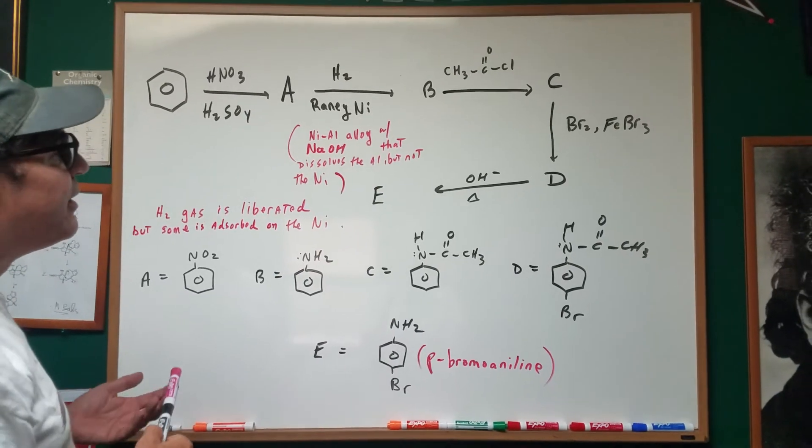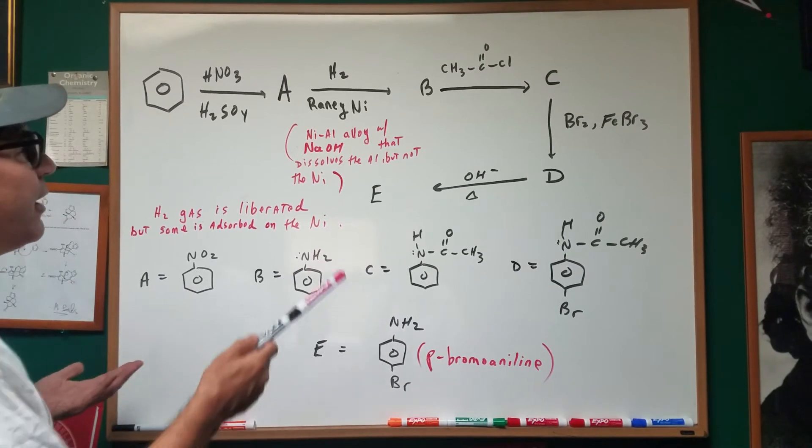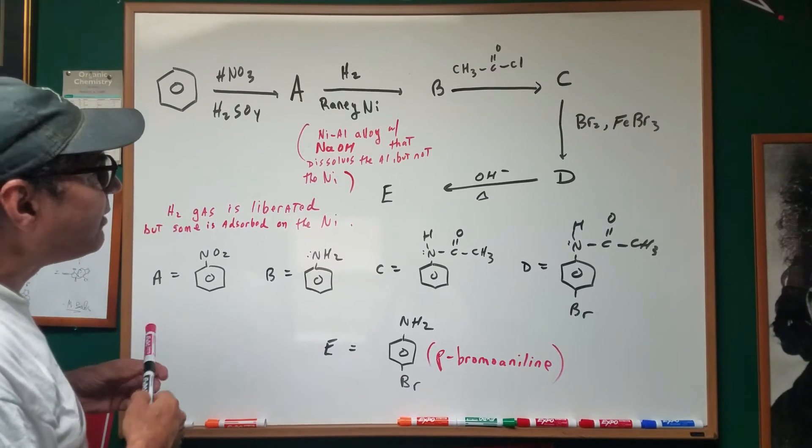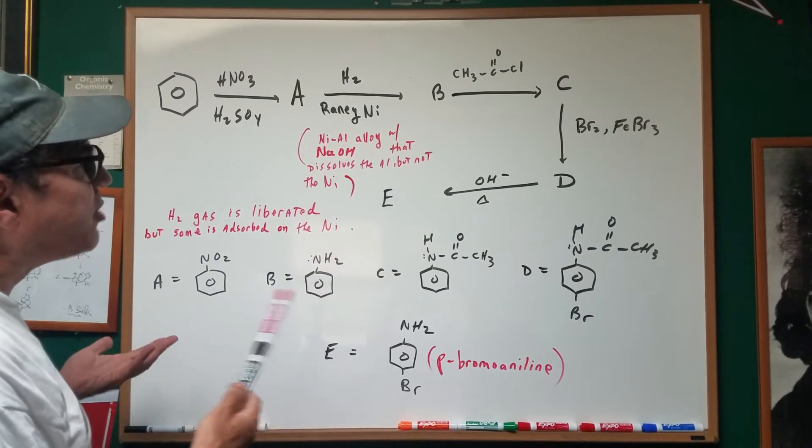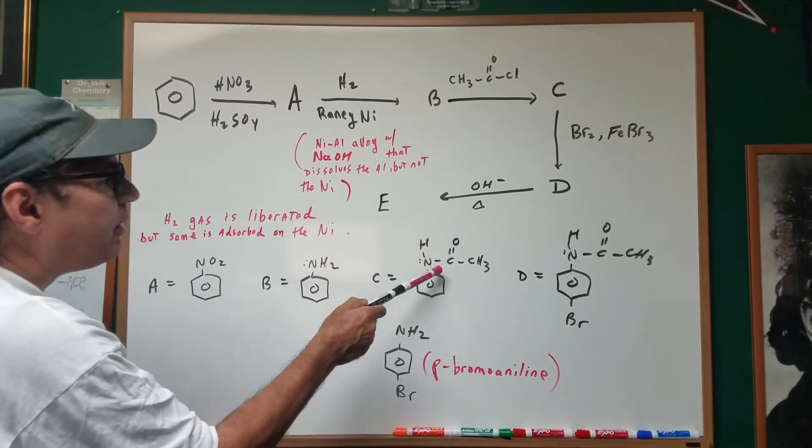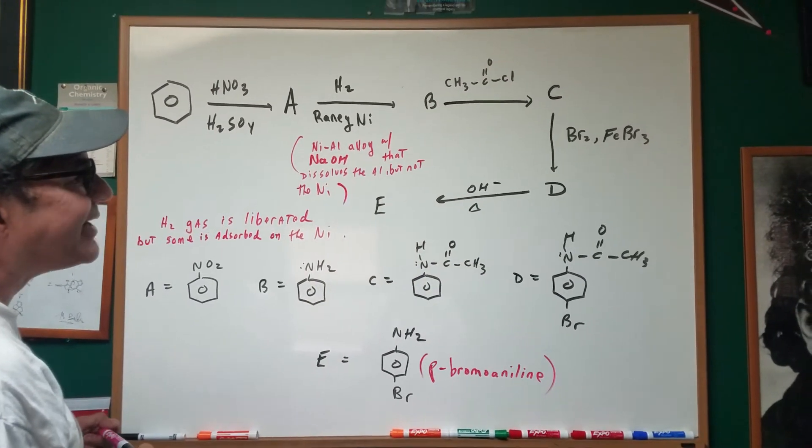Now, be careful from B to C. This is not a Friedel-Craft. Friedel-Craft does not work with aniline. You've got to remember that. Also, there's no aluminum chloride. You would just take off the H and the Cl, and you would produce C, called acetanilide.